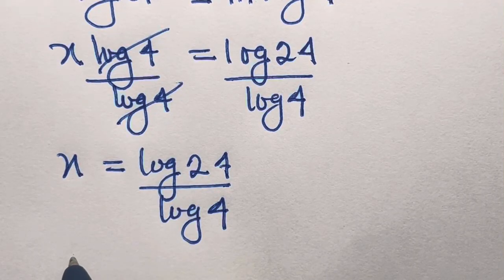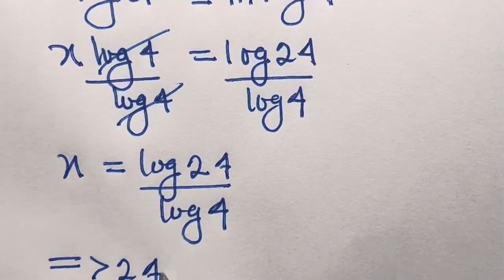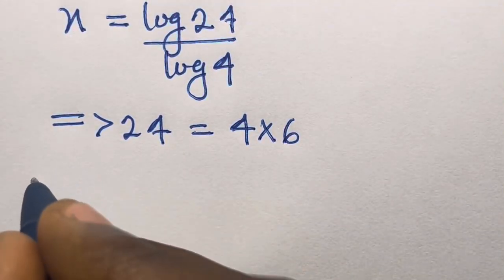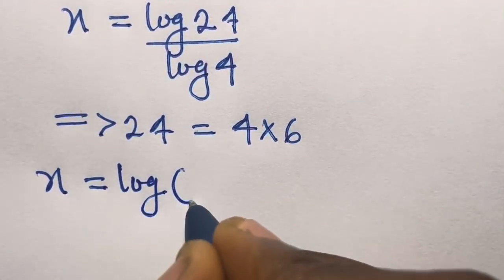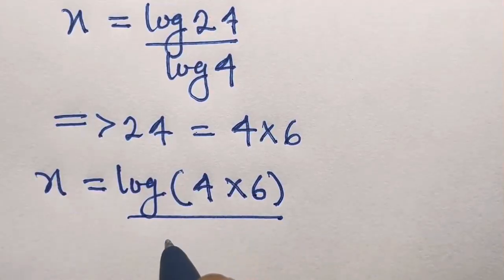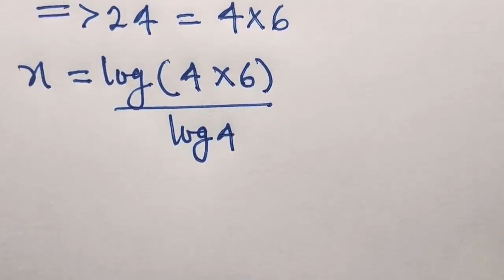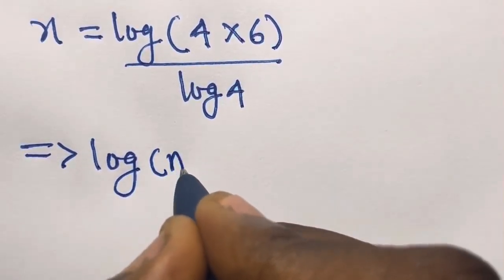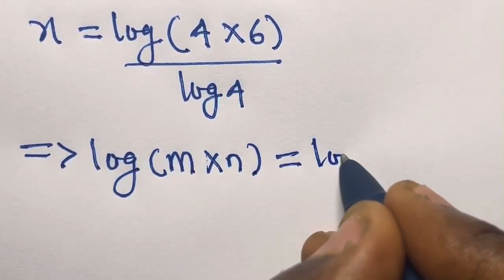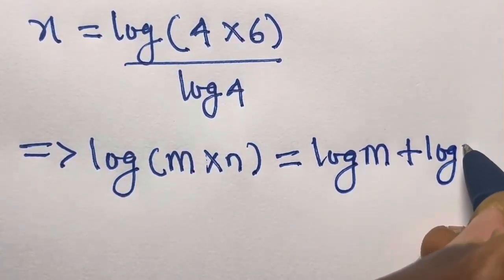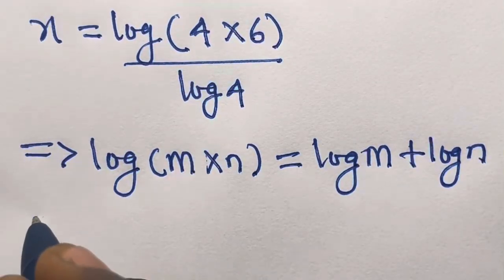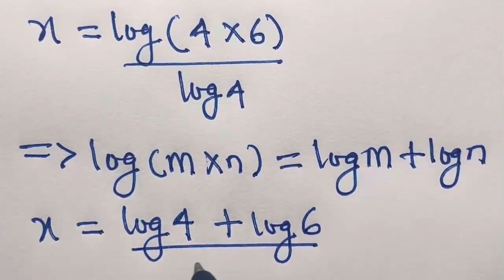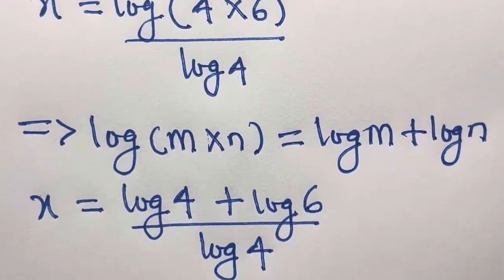We can express 24 as a product of 4 and 6. So let's replace 24 with 4 times 6, giving x equals log(4 times 6) divided by log 4. From the law of logarithms, log(m times n) equals log m plus log n. Applying this, we have x equals log 4 plus log 6, all divided by log 4.